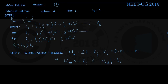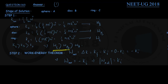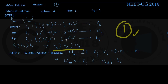Similarly, W_B equals K_B for the disk, and W_C equals K_C for the ring. Since K_C > K_B > K_A, we can write W_C > W_B > W_A. This gives us the solution and we choose option number 1. Maximum work is required to stop the ring, then the disk, and the least work is required for the sphere.